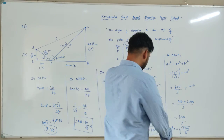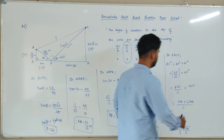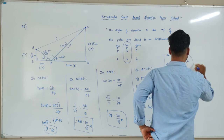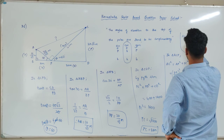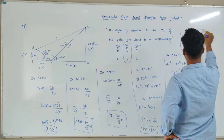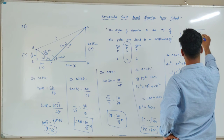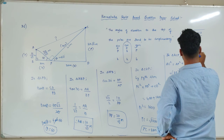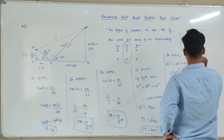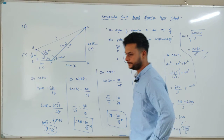If you want, you can stop here with AC squared equals 5200 by 3. Or you can simplify further: 5200 equals 400 into 13, so AC equals square root of 400 into 13 by 3, which equals 20 root 13 by root 3 meters. This is the final answer.